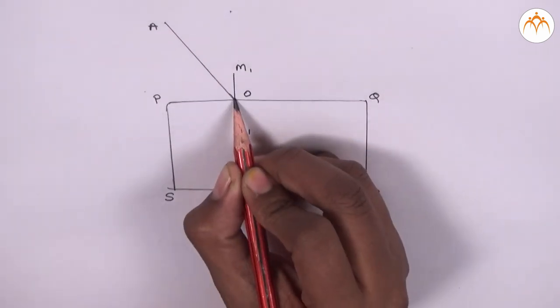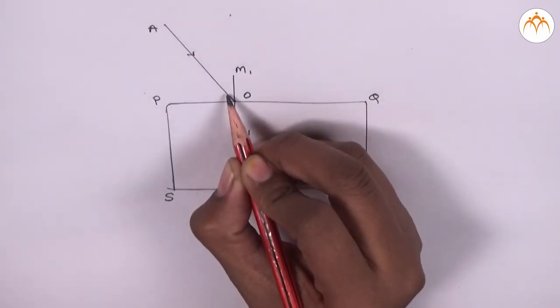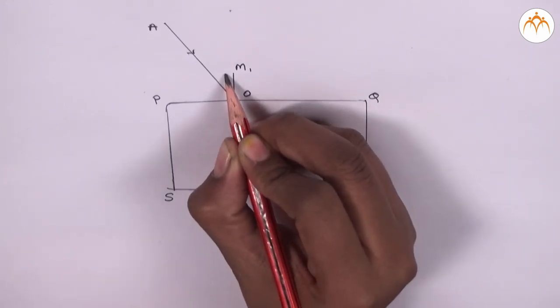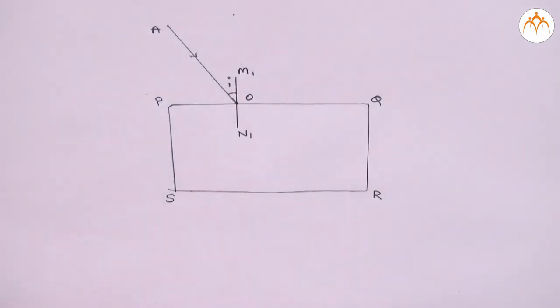This ray is called incident ray and the angle is angle of incidence. So we are doing this experiment with the angle of incidence 30 degrees. Remember that 30 degrees is the angle between AO and M1 O.